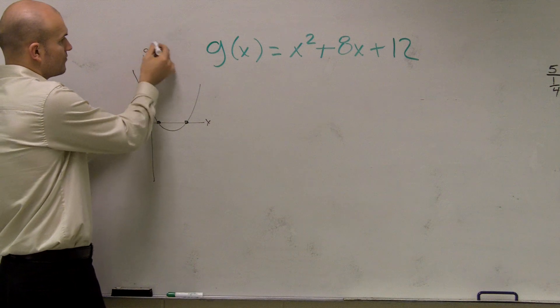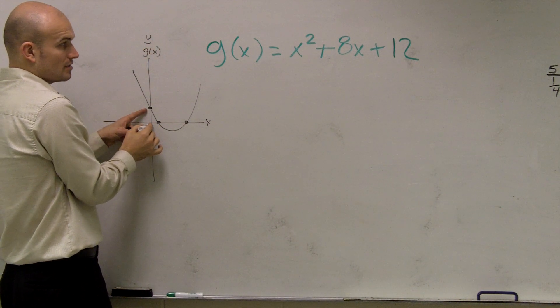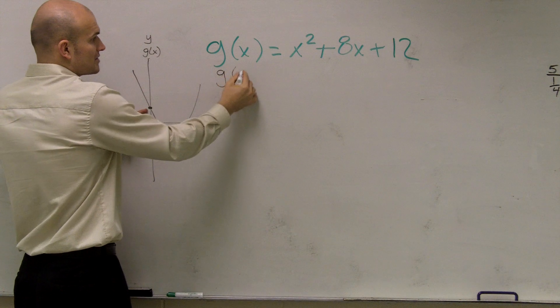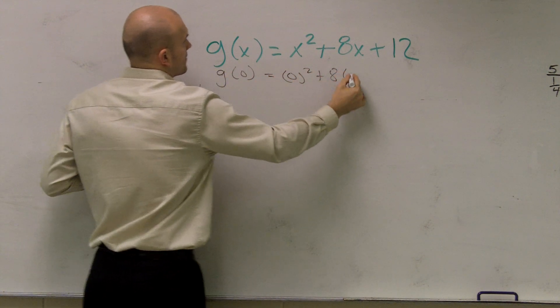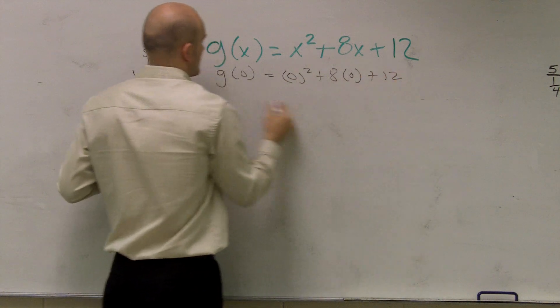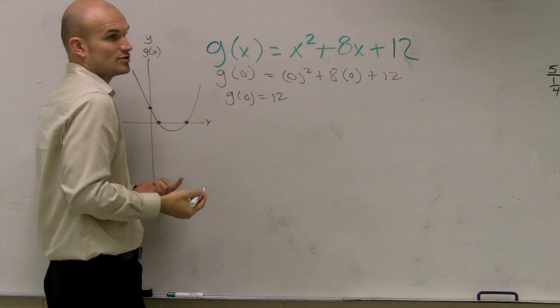To find our y-intercept, when x equals zero. Therefore, to find the y-intercept, you just plug zero in for x. So therefore, g of zero equals 12. So that's the y-intercept.